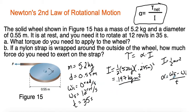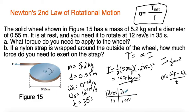Now for angular acceleration, we want everything in radians per second. The problem gives us 12 revolutions per second, so we convert: 12 revolutions per second times 2π radians per revolution. The revolutions cancel, giving us 12 times 2π equals 75.40 radians per second.